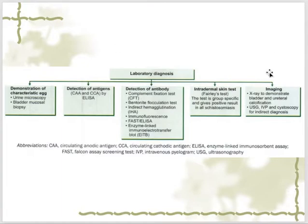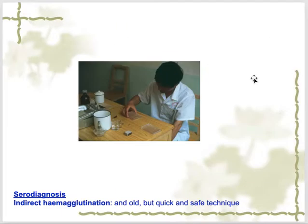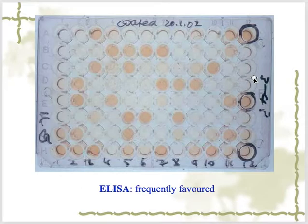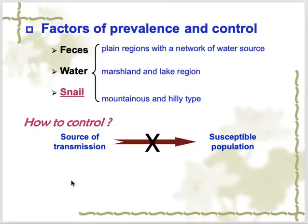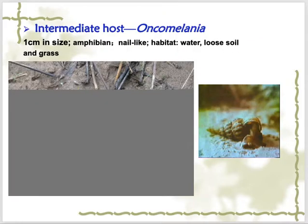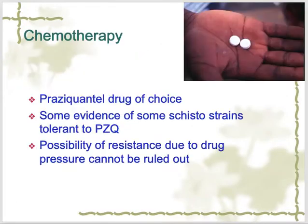These are all the testing measures available to detect schistosome infection. ELISA is the most favored one for making the diagnosis because it detects the antigen. Now, how do we treat these patients? That is very important.